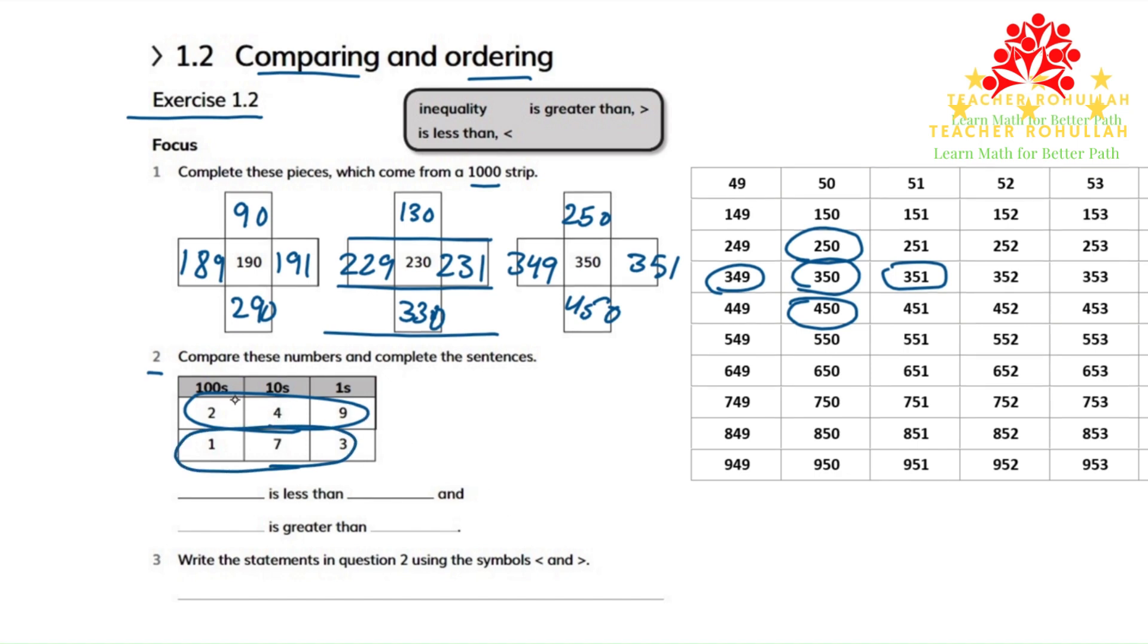Now we know that in the first number we have a two in the hundreds place. In the second number we have a one in the hundreds place. So the first number is bigger or greater than the second number.